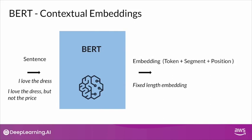Let's take the example of these two sentences: 'I love the dress' and 'I love the dress but not the price.' Obviously the context of the word 'dress' is different in these two sentences. BERT can take into consideration the words that come prior to the word 'dress' as well as the words that follow it. Using this bi-directional nature of the transformer architecture, BERT is able to capture the context, so the embeddings generated for the word 'dress' in these two sentences will be completely different. However, the length of the embeddings in these two sentences is going to be fixed.